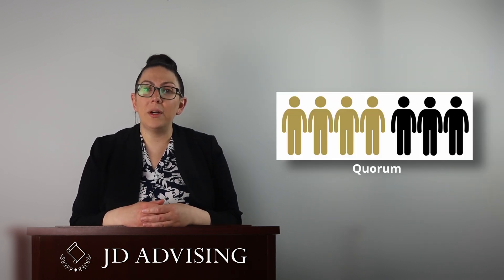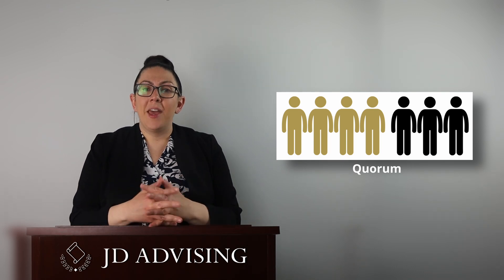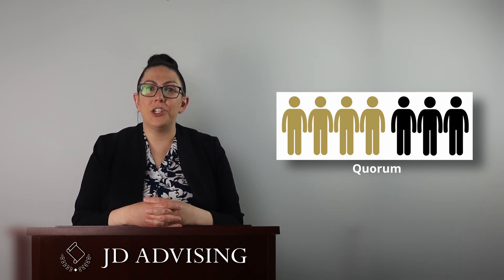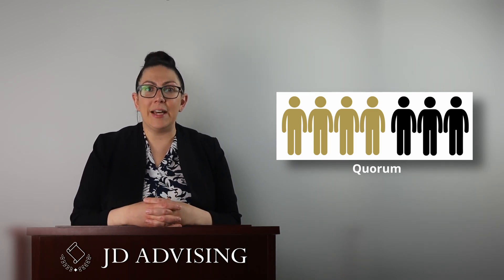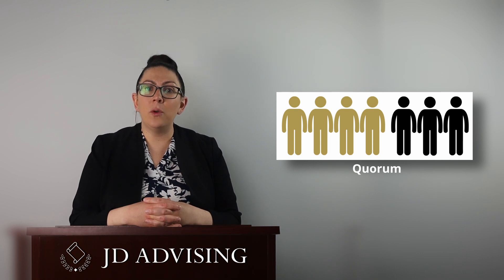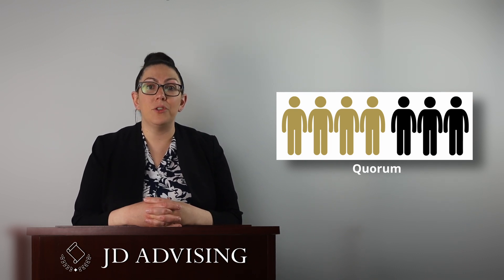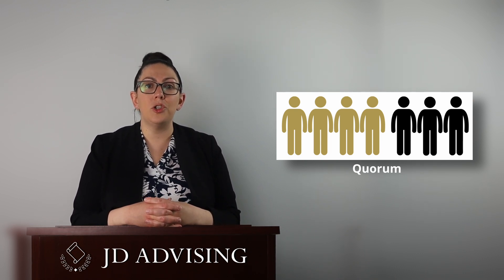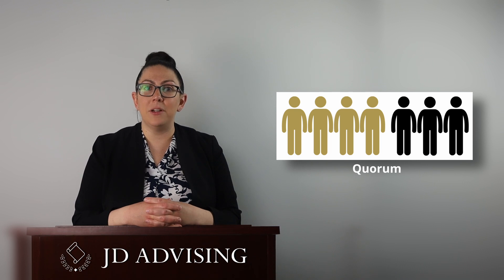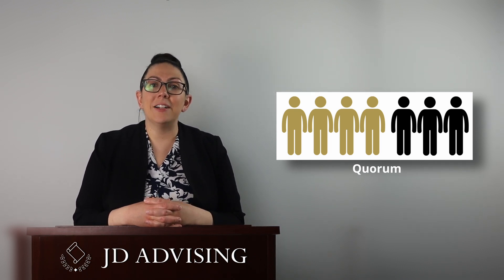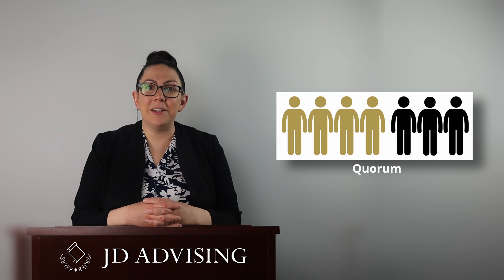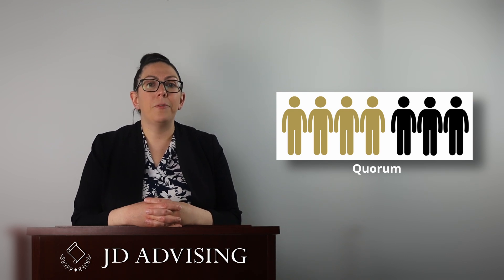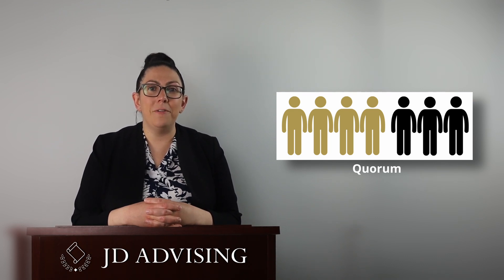Finally, we have quorum, which basically means majority. This comes up when the directors or the shareholders are meeting and voting on something. In order to have a proper meeting of the board of directors, a quorum—or a majority—of the members of the board have to be present. So for example, if there are seven members of the board of directors, four of them must be present in order for the board to have a proper meeting.